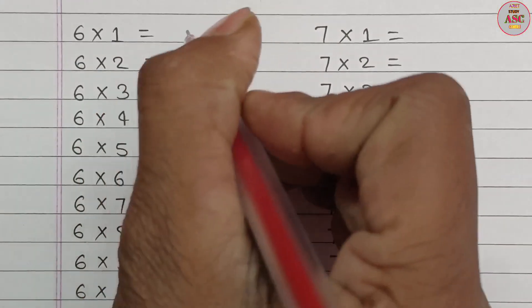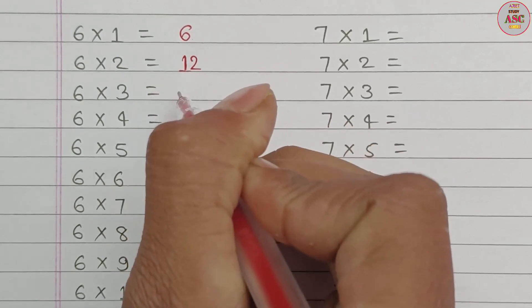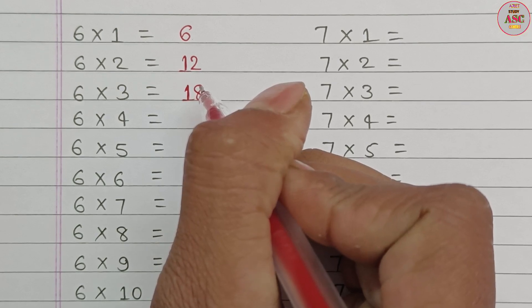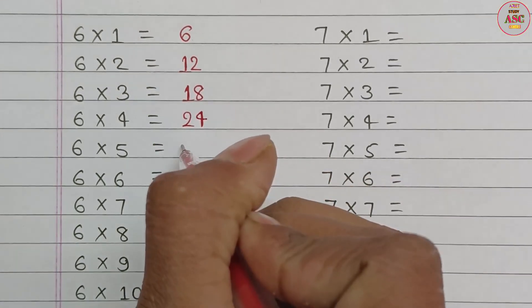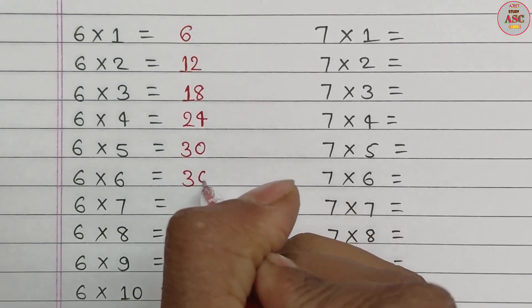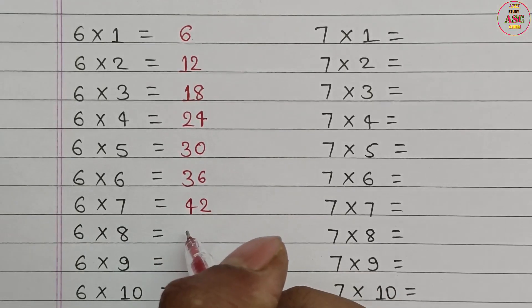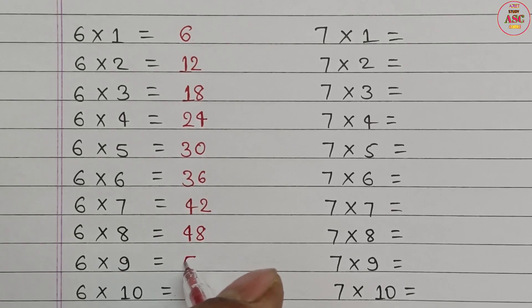6 times 1 equals 6. 6 times 2 equals 12. 6 times 3 equals 18. 6 times 4 equals 24. 6 times 5 equals 30. 6 times 6 equals 36. 6 times 7 equals 42. 6 times 8 equals 48. 6 times 9 equals 54. 6 times 10 equals 60.